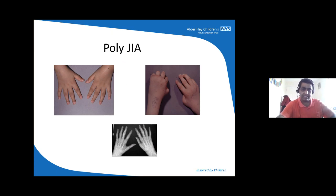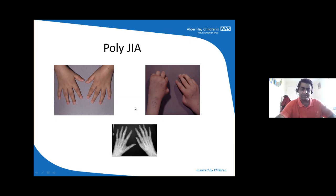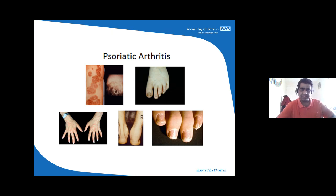Due to copyright and patient confidentiality, I had to remove some pictures of polyarticular JIA, but you can see from these pictures that multiple joints in the hands are involved on both sides. Any patient who has four or more joints involved at presentation will be classified as polyarticular JIA. Psoriatic arthritis typically has a rash consistent with psoriasis, features of dactylitis, and most of the time features of enthesitis as well.